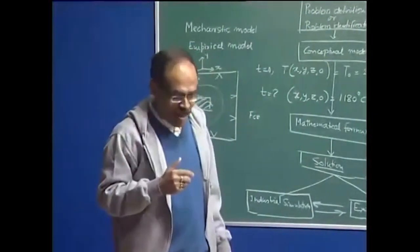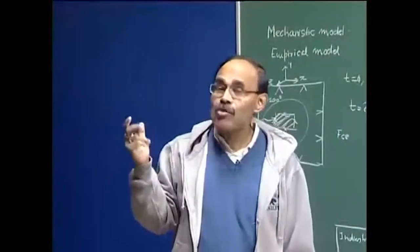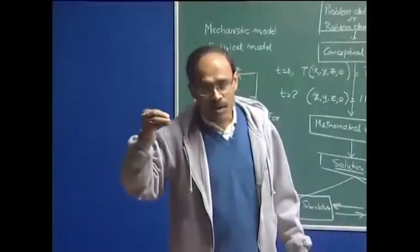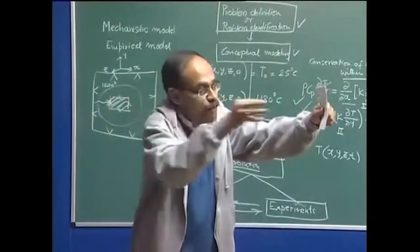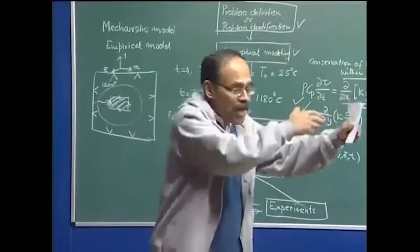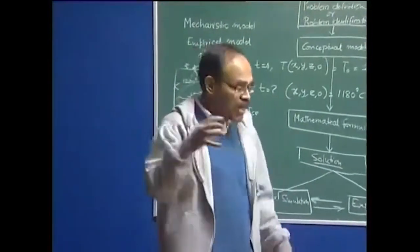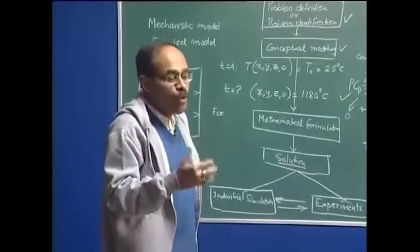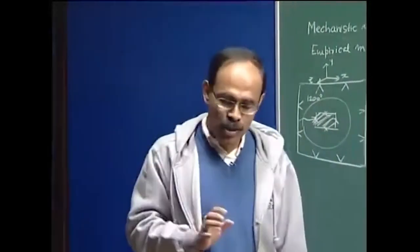In the secondary cooling zone of a continuous caster, if I want to develop a mathematical model for heat transfer from first principles, we will see that our understanding is far from complete. You have a nozzle through which spray mist — air and water — comes and impinges on the surface of the billet. The spray mist breaks down into droplets, impinges on the hot surface, and removes heat. This process is extremely complex; our understanding of droplet formation, breaking of the continuous stream into droplets, impingement, and evaporation at the surface are far from complete. As a result, considerable idealization and approximations will go into the model building.